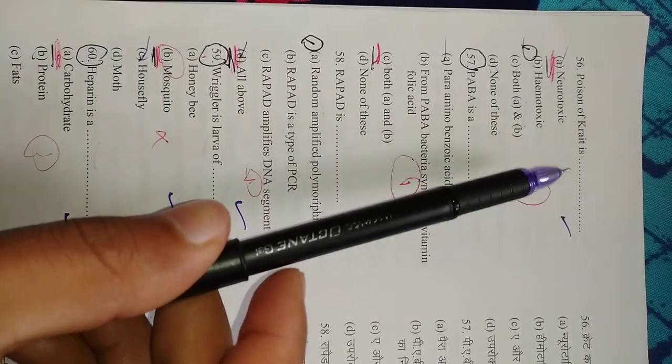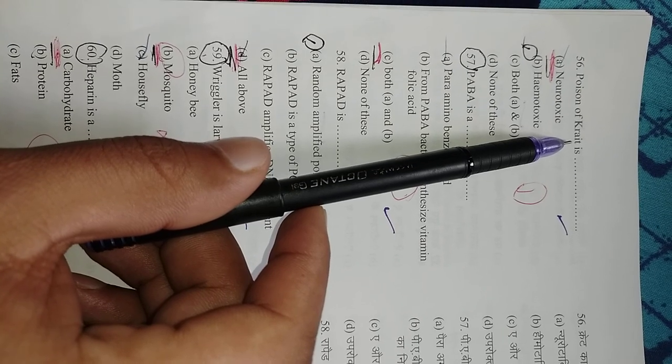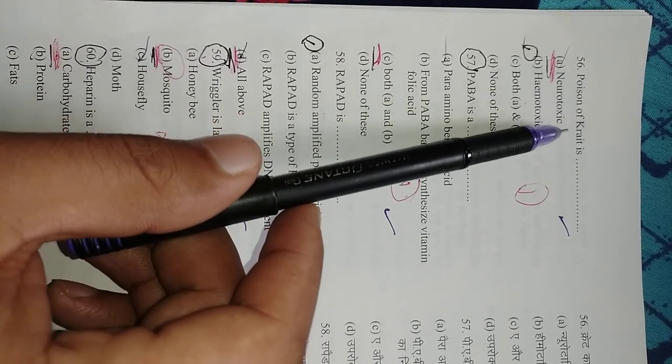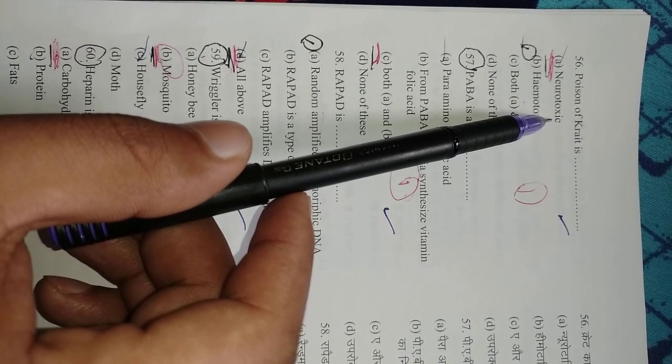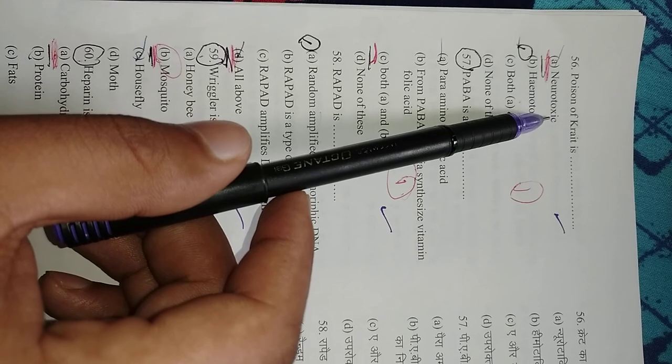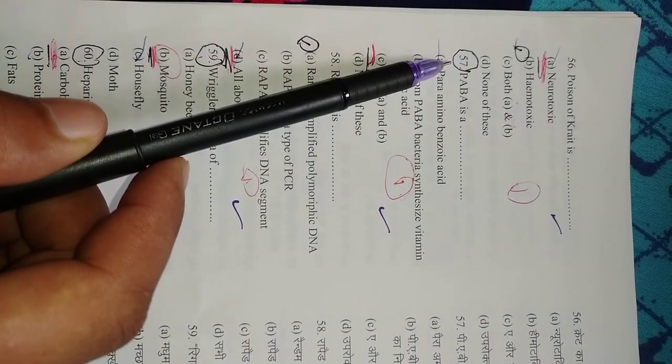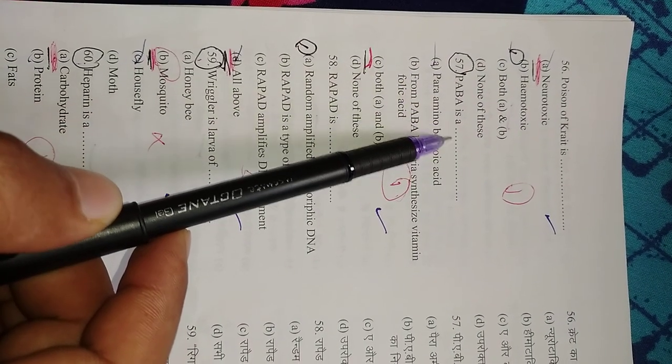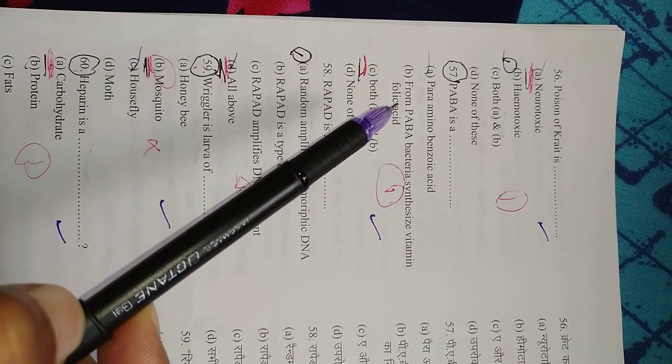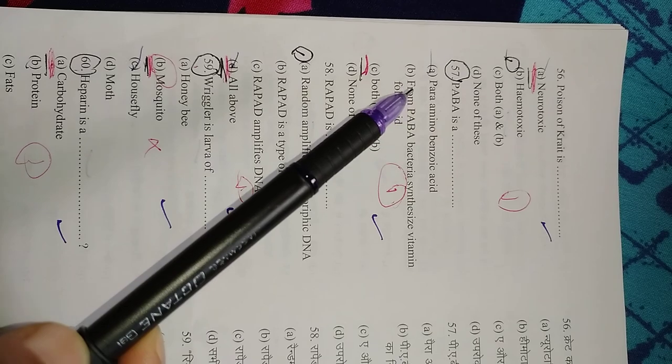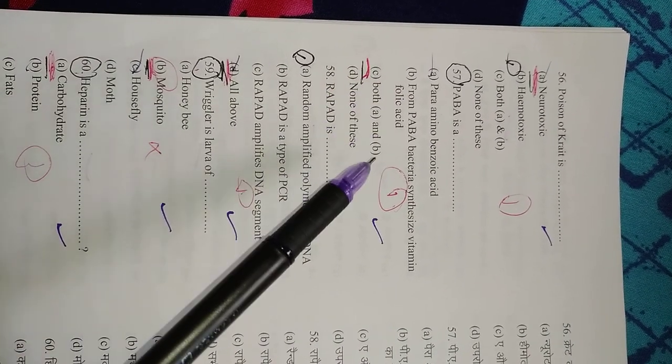Question number 56: Poison of krait—krait is a snake found in the Indian subcontinent and it is neurotoxic, which means it affects the neurons or the synapse. So right option is A, neurotoxic. Question number 57: PABA—the full form of PABA is para-aminobenzoic acid, and bacteria use PABA to synthesize folic acid. These are present in the intestine of humans. So right option is C, both A and B.